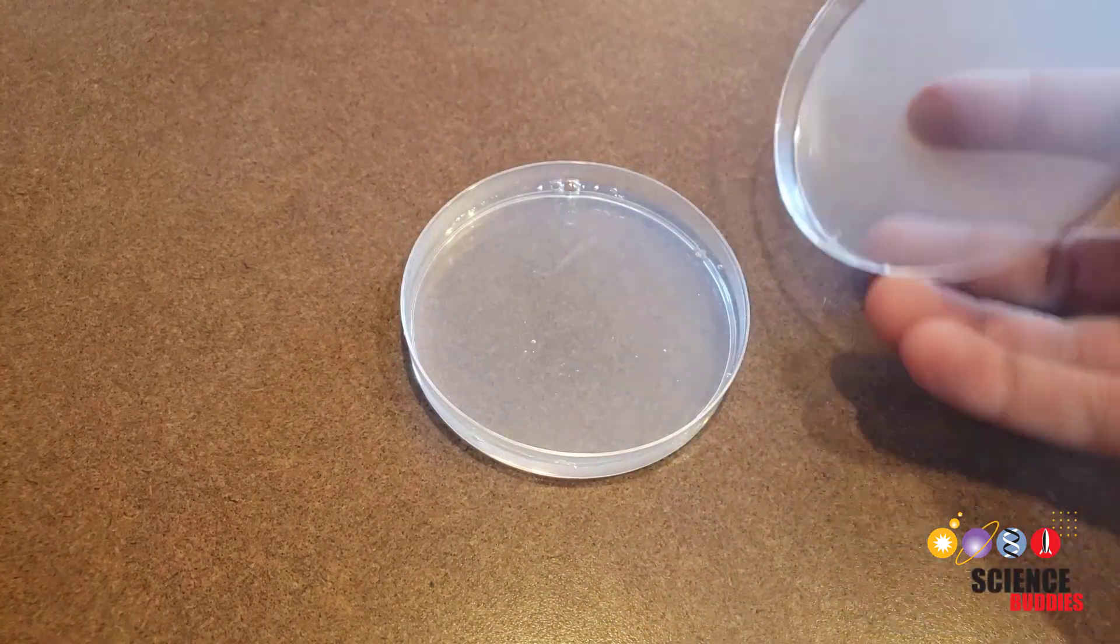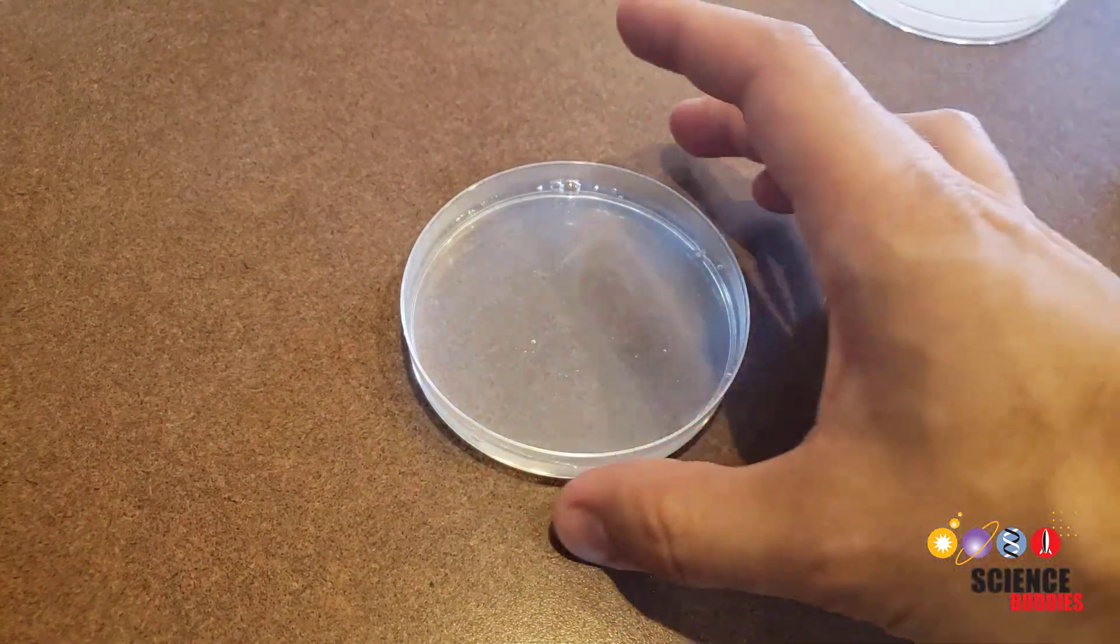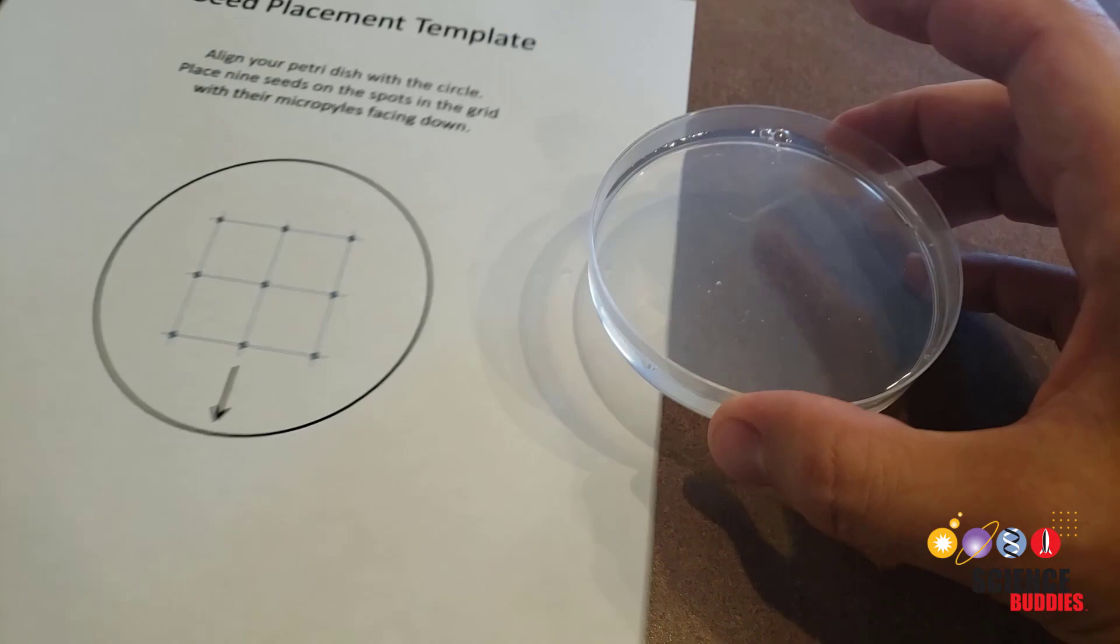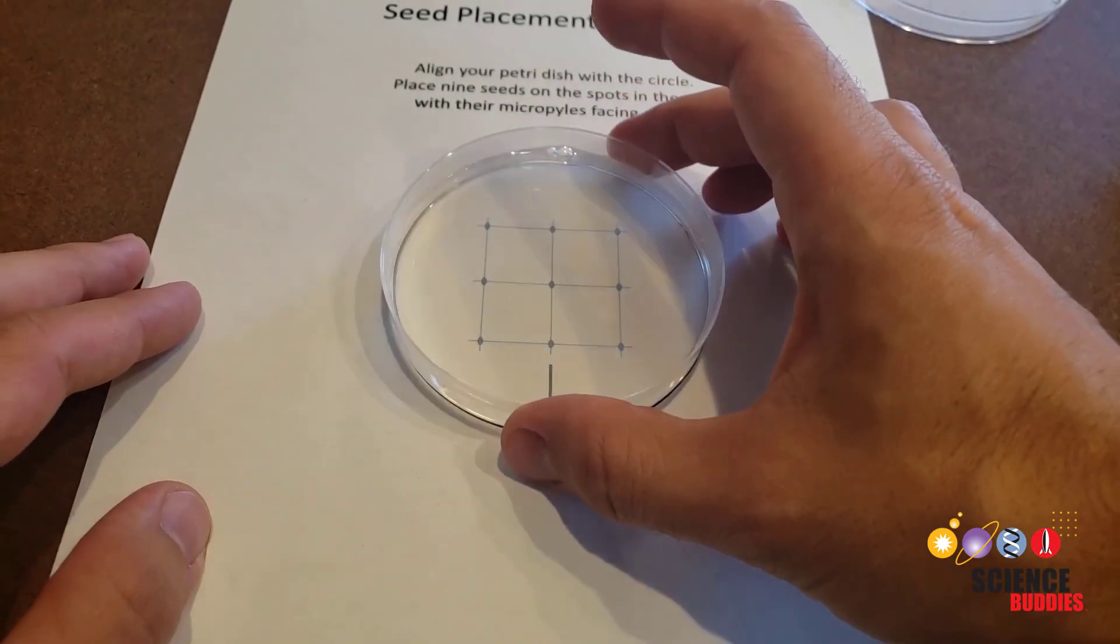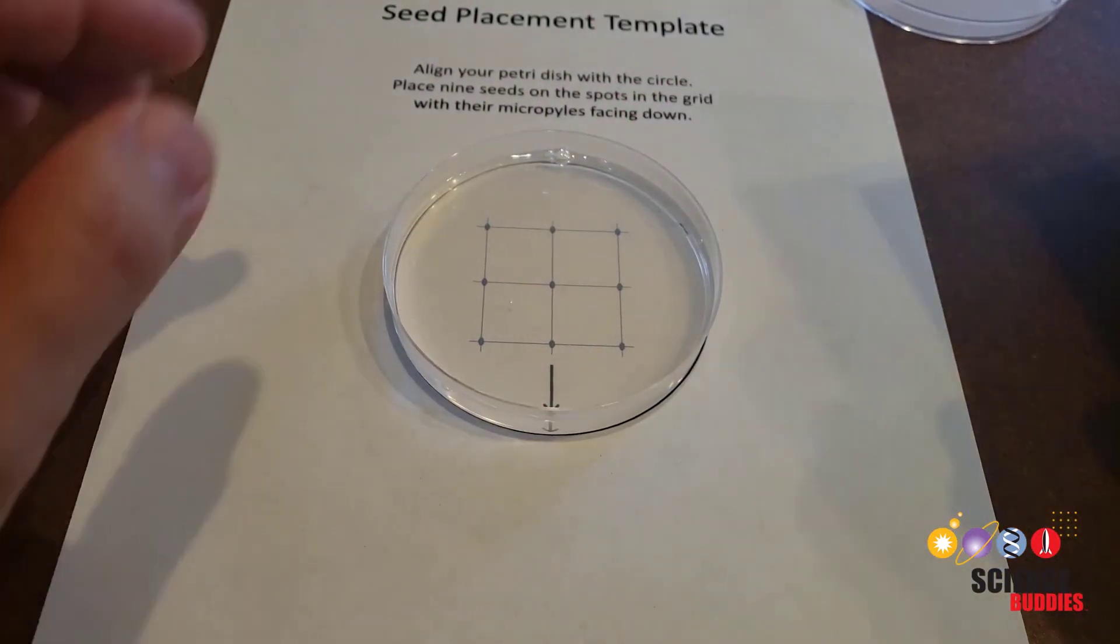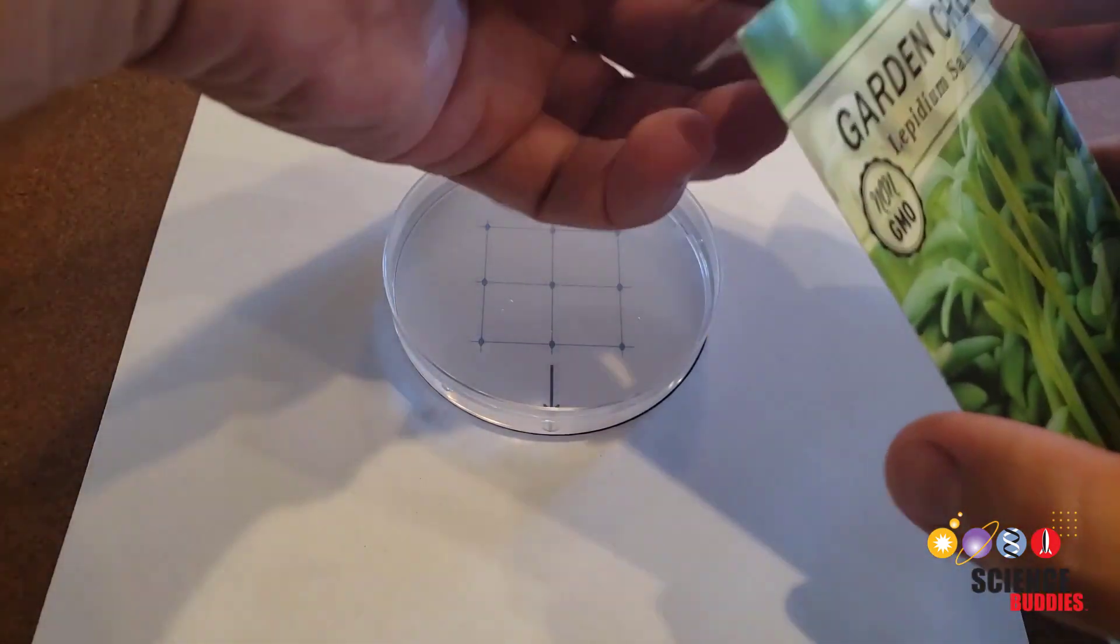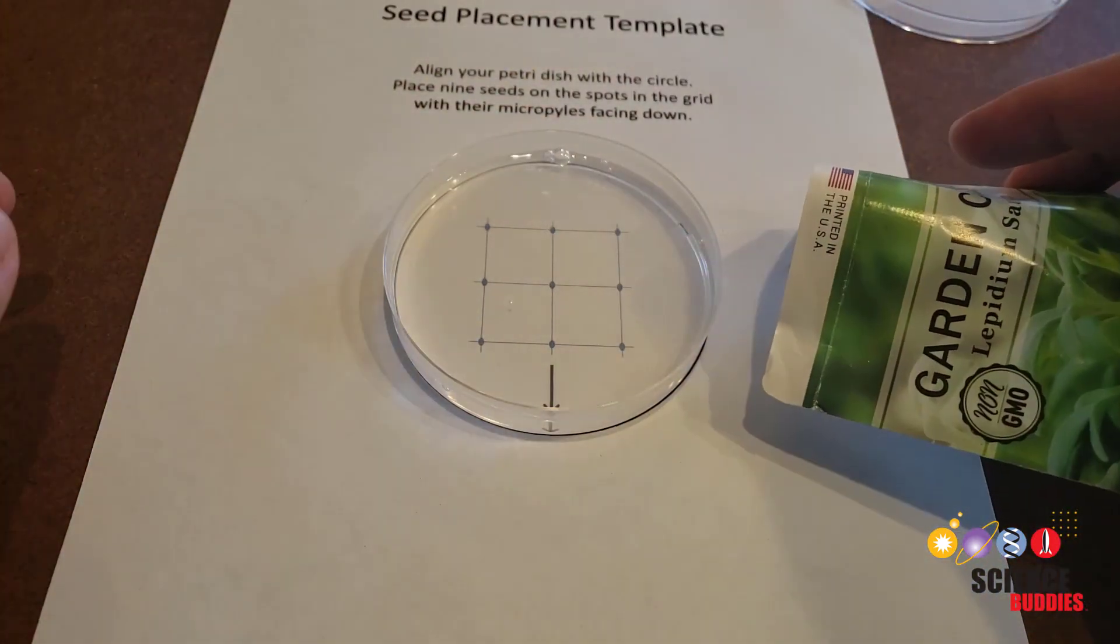What you do next depends on the exact experiment you plan on doing. A seed placement template is available on the Science Buddies website, linked in the description of this video, that allows you to place nine evenly spaced seeds in a single petri dish.